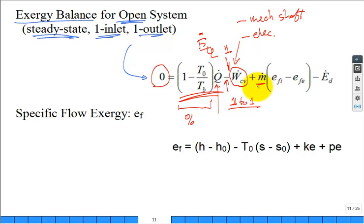Then we have our mass flow rate. Well, if it's steady state, one inlet, one outlet, then it just simplifies. And then we have our exergy flow and our exergy flow. So this is our specific flow exergy coming in. This is our specific flow exergy exiting. Here's our general equation for our specific flow exergy.